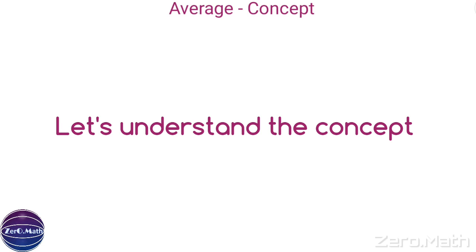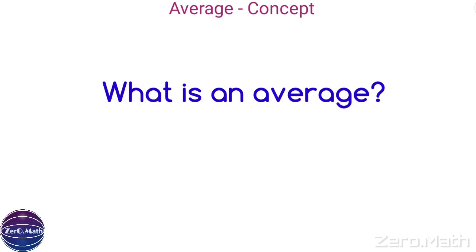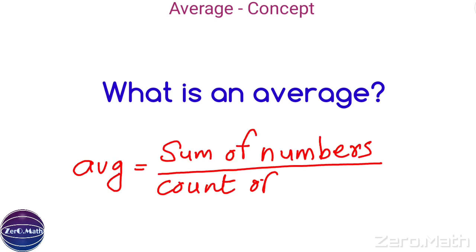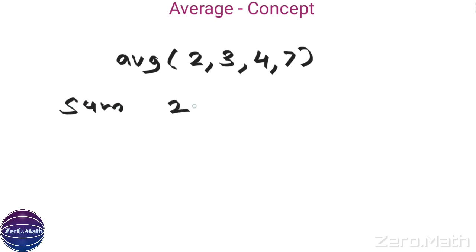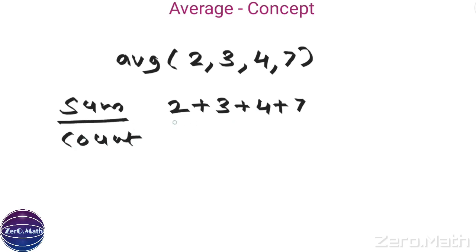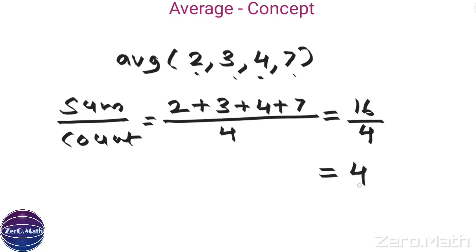First, let us understand the concept. What is an average? In simple terms, the average is the sum of numbers divided by the count of numbers. For example, the average of 2, 3, 4, and 7 would be: sum = 2 + 3 + 4 + 7, divided by the count of numbers, which is 4. That gives us 16 divided by 4, which equals 4. Hence, 4 is the average of these 4 numbers.